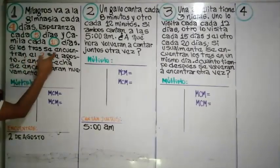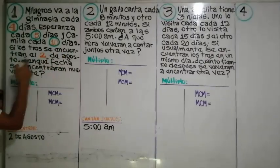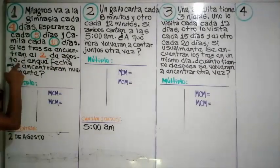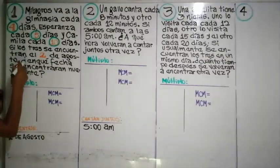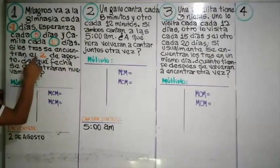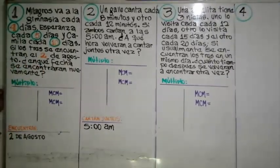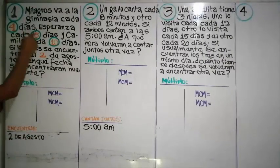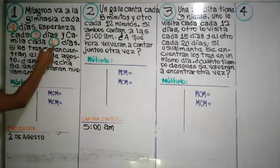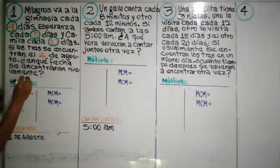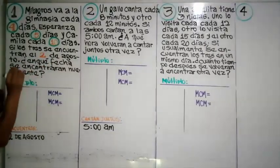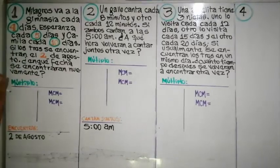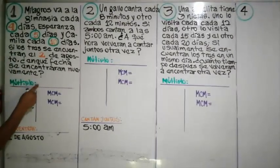En otras palabras, van juntos el dos de agosto. Para saber cada cuántos días van juntos, necesariamente tenemos que hallar múltiplos de cuatro, de cinco y de diez.